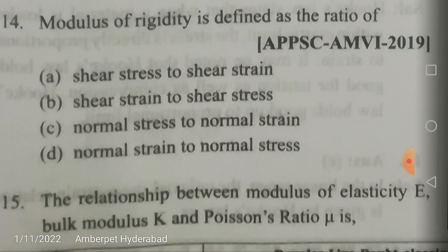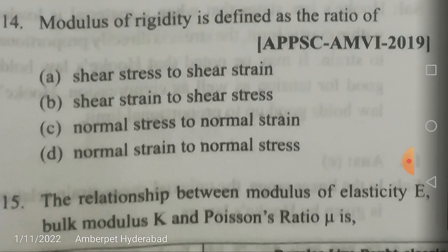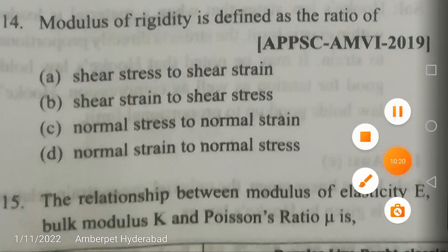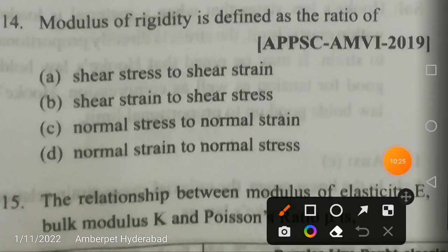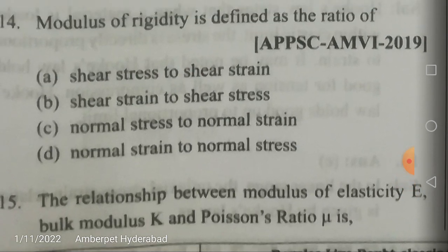Modulus of rigidity is defined as the ratio of shear stress to shear strain. It is also called shear modulus. The reciprocal would be shear strain to shear stress. Normal stress to normal strain is Young's modulus. The correct answer is shear stress to shear strain.